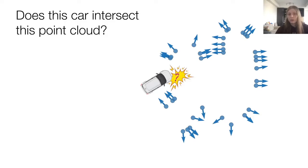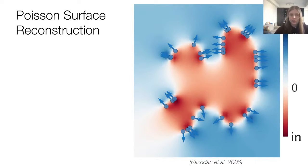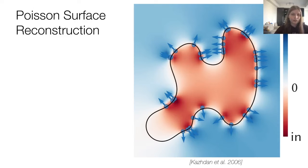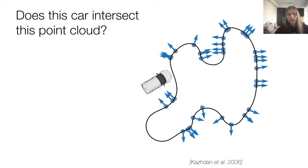The most well-known surface reconstruction algorithm in computer graphics is Poisson surface reconstruction. Basically, this algorithm uses the point cloud to get a scalar field, that is an implicit representation of the surface. This scalar field takes positive values outside the shape and negative values inside. Then the zero level set of this scalar field is the reconstructed surface.